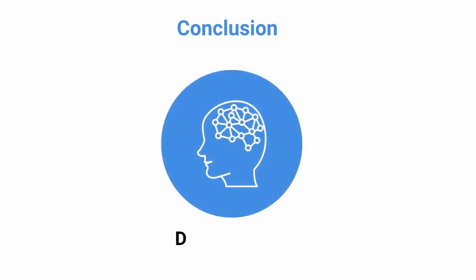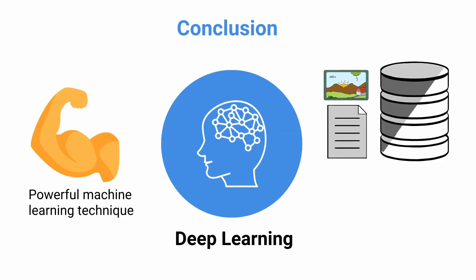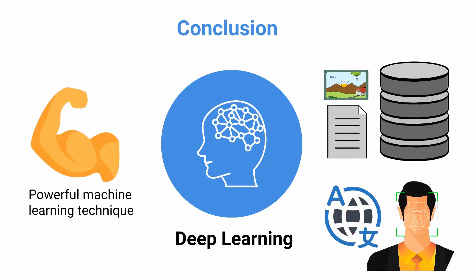Conclusion. In conclusion, deep learning is a powerful machine learning technique because it extracts features from images, text, or other datasets. It has been applied to tasks ranging from language translation to facial recognition.